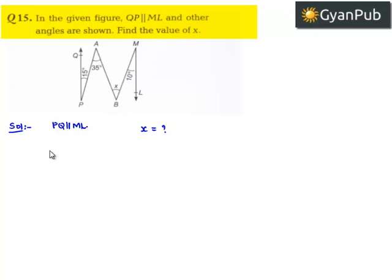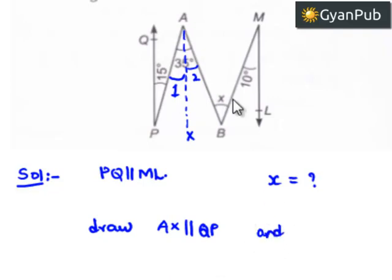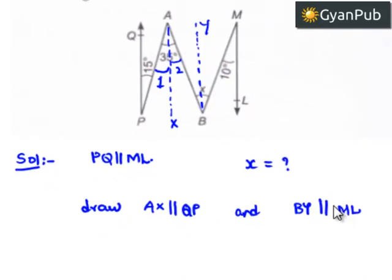Let us draw a line AX parallel to QP, and name this angle as angle 1 and this angle as angle 2. Also, let us draw BY parallel to ML, and name this angle as angle 3 and this angle as angle 4.